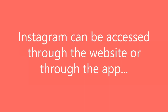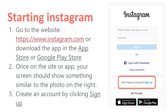Instagram is available through the website or through the app, and they have a mobile app for Android and iPhones. To start on Instagram, you're either going to go to the website, Instagram.com, or you can download the app in the Apple App Store for iPhones or the Google Play Store for Android devices.